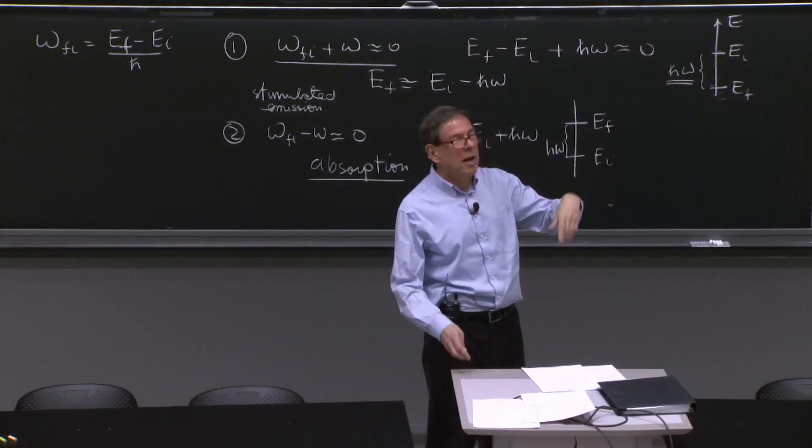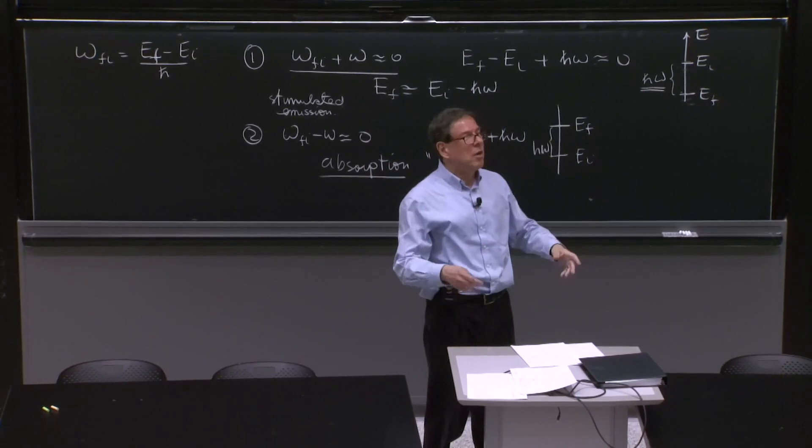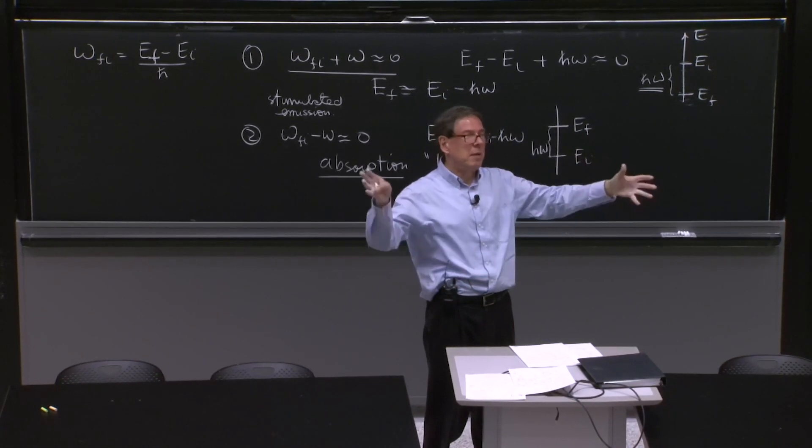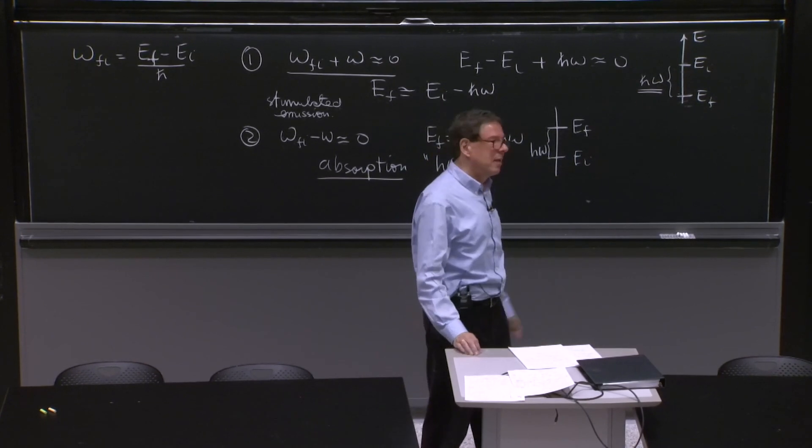So once you compute this number, you get the probability of transition per unit time. So if this W is something, and you have a billion atoms, you multiply that probability by the number of atoms you have, and you know how many have decayed.